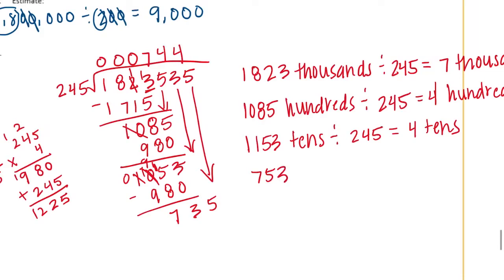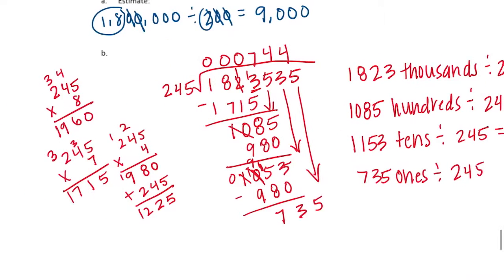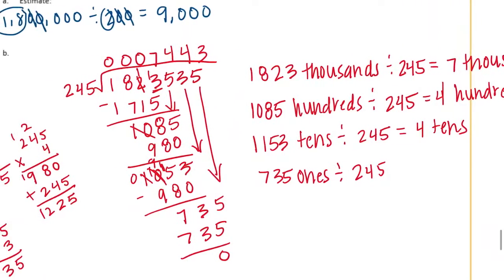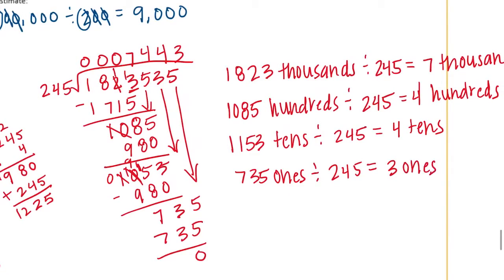So our final step is 735 ones divided by 245. My estimate is 3. 3 times 5 is 15, carry the 1. 3 times 4 is 12 plus 1 is 13, carry the 1. 3 times 2 is 6 plus 1 is 7. So it can go in 3 times with no remainder.